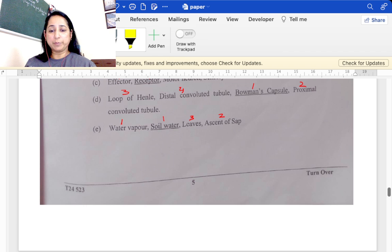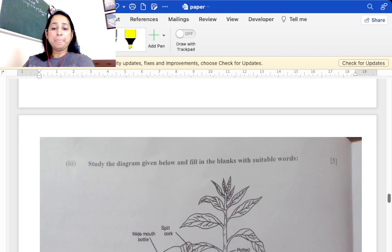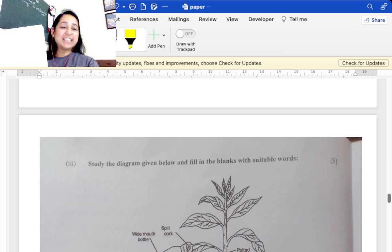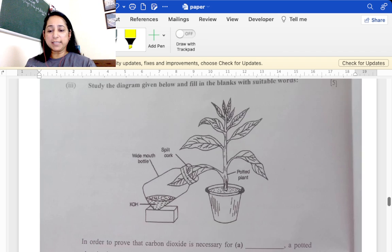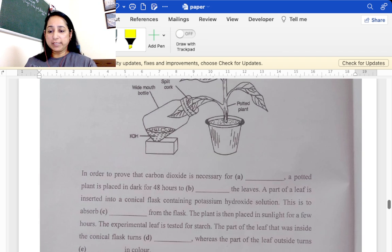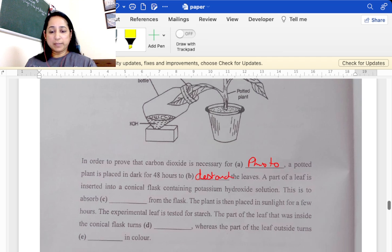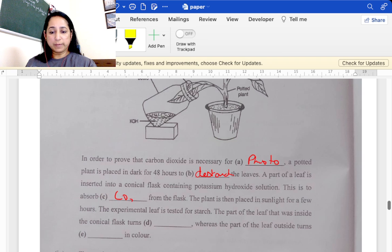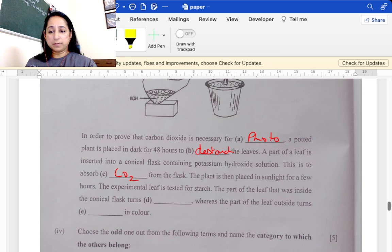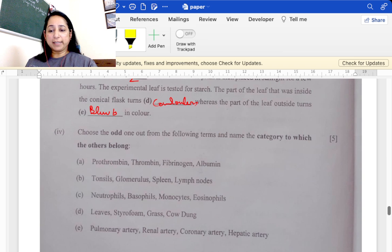Study the diagram and fill in with suitable words. They have made a change. In order to prove CO2 is necessary for photosynthesis, what plant? For destarching. A leaf, plant is inserted into KOH to absorb CO2. Plant is placed in sunlight. Iodine to turn colorless. Colorless is inside and outside it is blue-black.